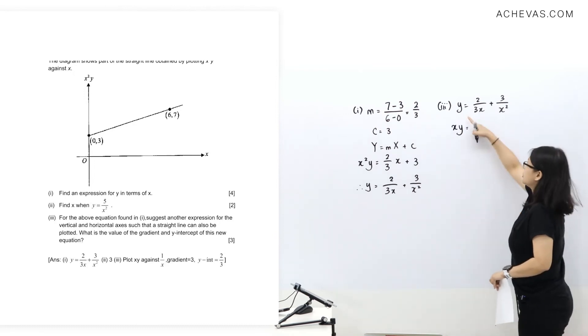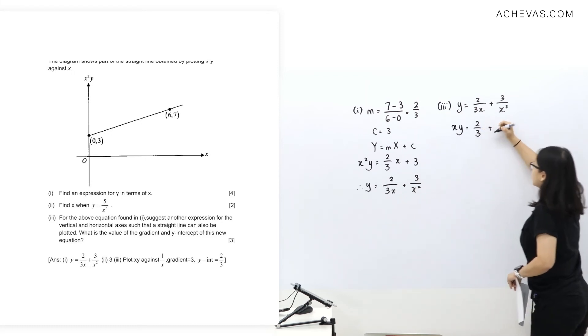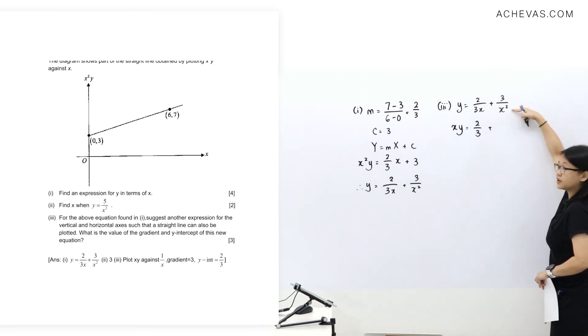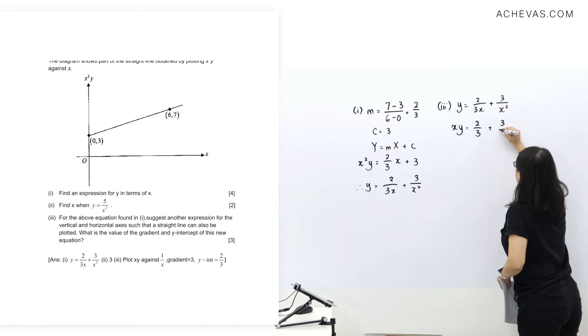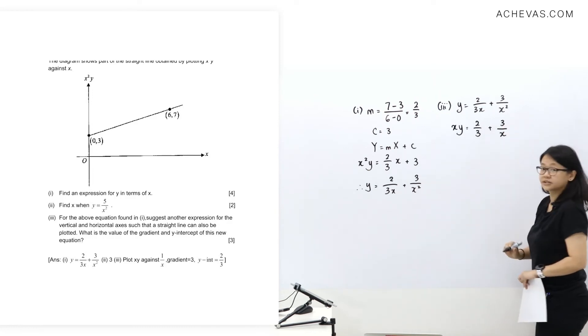This term, multiply by x, I'll get 2 over 3. And I'm going to multiply by x here as well. So you'll get 3 over x.